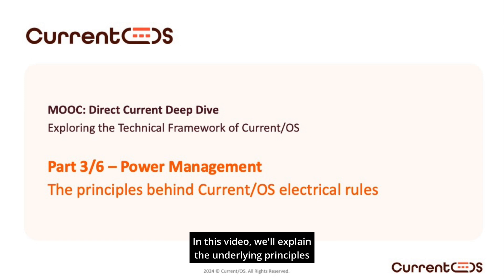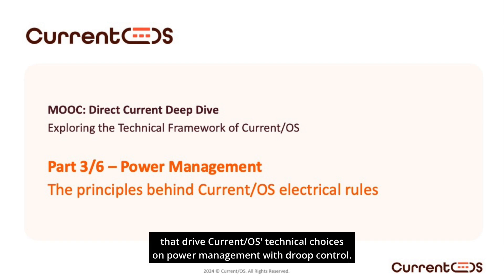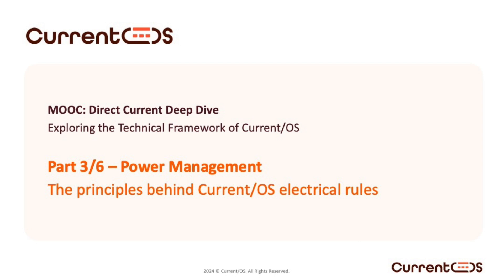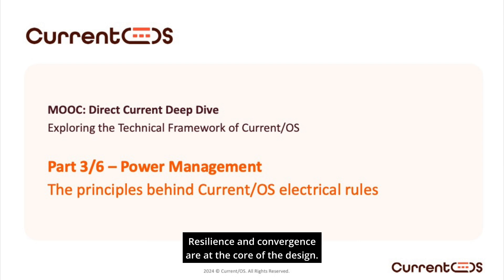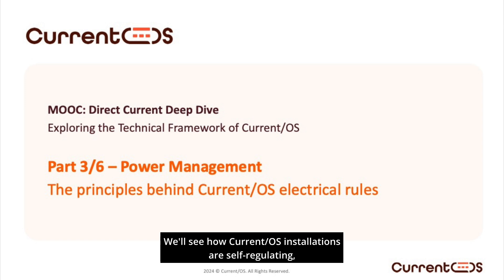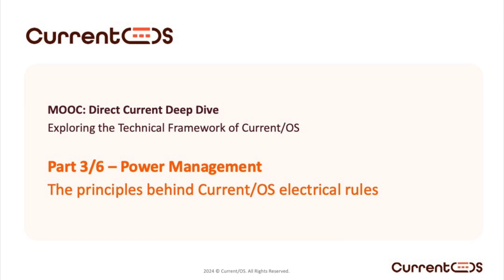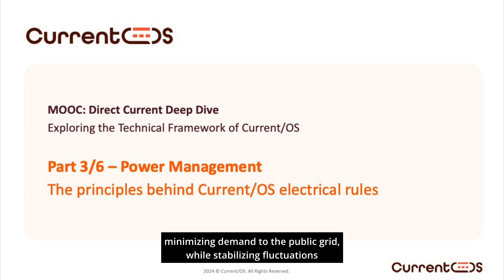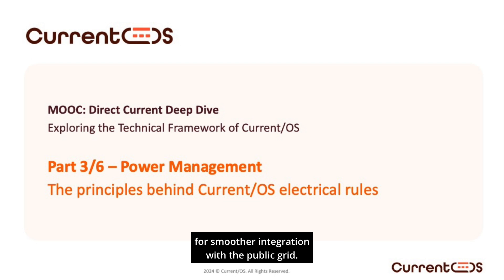In this video, we'll explain the underlying principles that drive Current OS's technical choices on power management with droop control. Resilience and convergence are at the core of the design. We'll see how Current OS installations are self-regulating, minimizing demand to the public grid, while stabilizing fluctuations for smoother integration with the public grid.